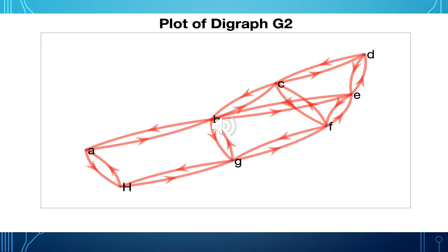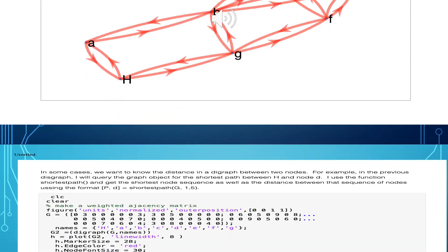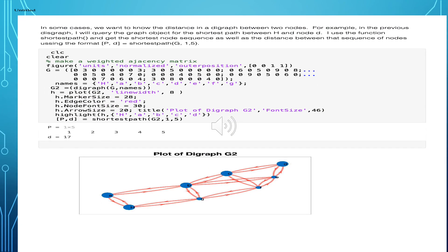You will notice that in this plot, I've made the H node as an arbitrary starting point for a path across the digraph. Let's say we want to know the distance from that point H on the digraph to some other node on that same graph. For example, here I'm querying the object for the shortest path between H and the node D. I use the function shortest path with its inputs and get the shortest node sequence, as well as the distance between that sequence of nodes, using the format P, D — P being the path, D being the distance between all of those in the sequence of nodes.